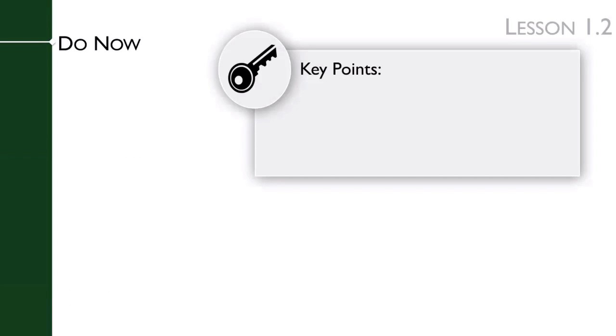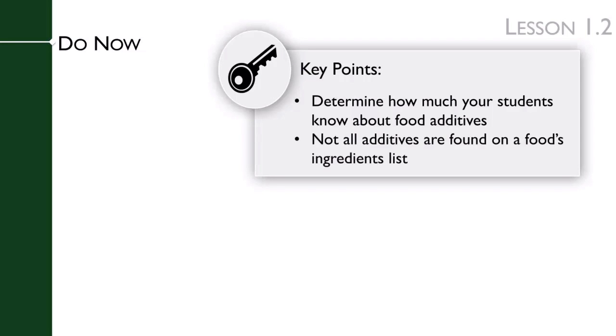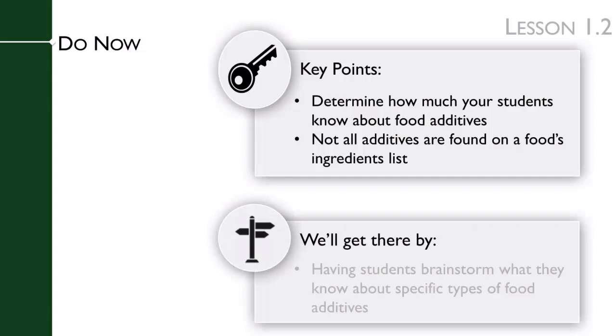The key points of this lesson's Do Now are to determine how much your students already know or don't know about food additives, and to make the point that not all food additives are found on a food's ingredients list. We get there by having students brainstorm what they know about specific types of food additives.